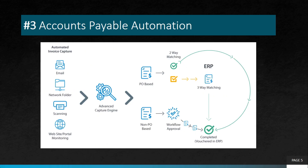The third project is accounts payable automation. This will also reduce time and effort. With automation, invoices can automatically be processed, approved, and paid. It will also improve supplier relationships and help businesses manage their cash flow more effectively. Accounts payable and invoice processing are closely interlinked.